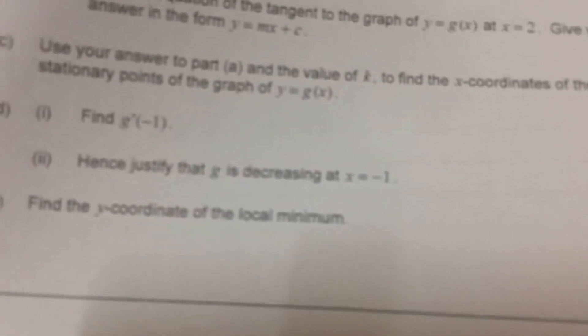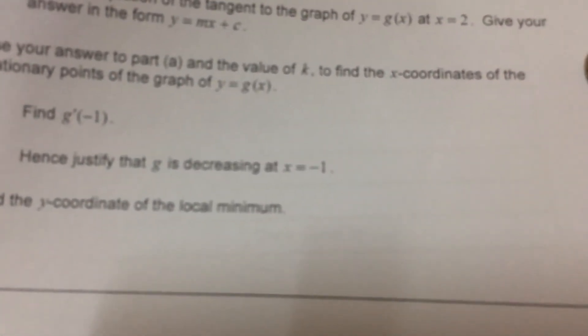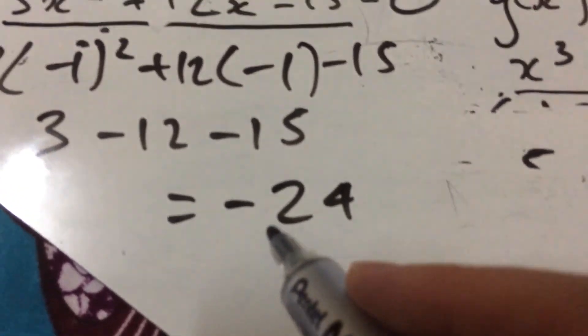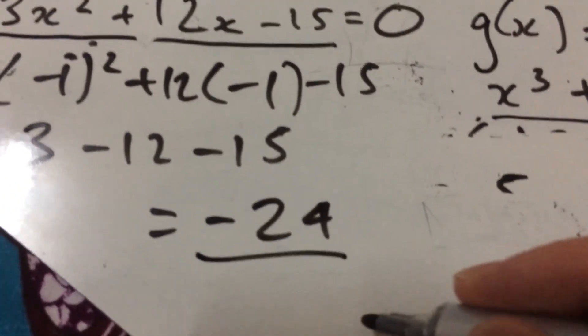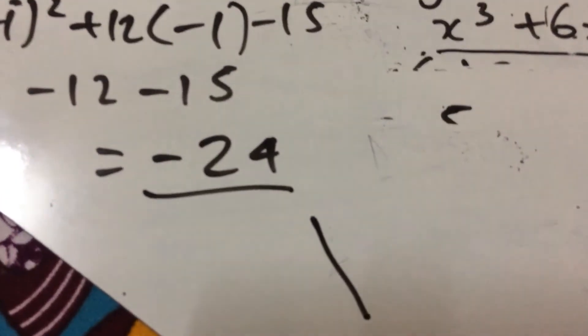And, then it says, hence justify that g is decreasing at x = -1. Well, because that gradient function is negative, it must be decreasing at x = -1.